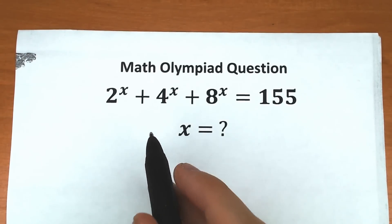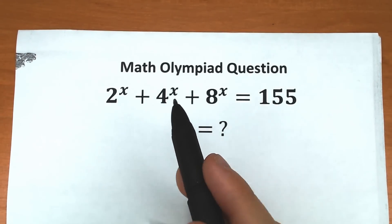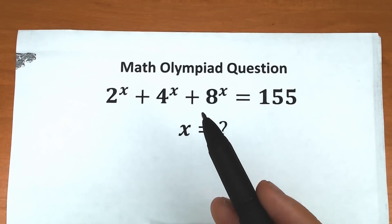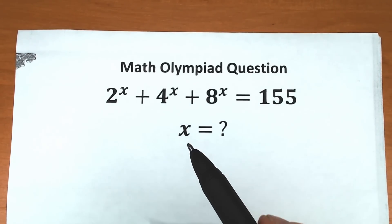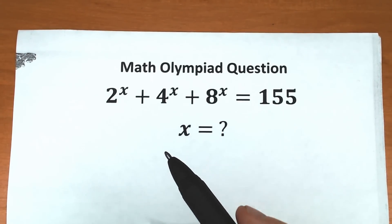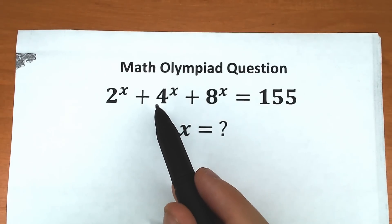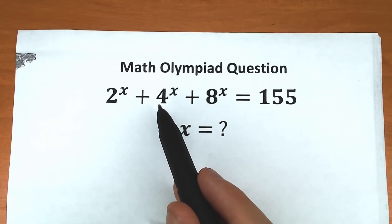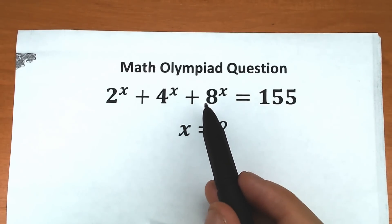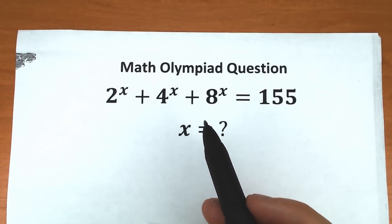First of all, we have different bases: 2, 4, and 8. That's not ideal — we should create the same base. How can we do this? Well, 4 is the same as 2 squared, and 8 is the same as 2 cubed.